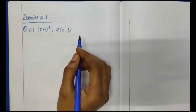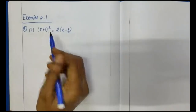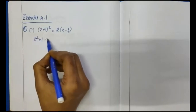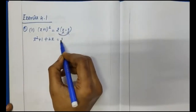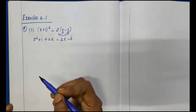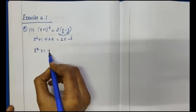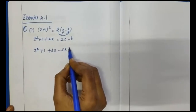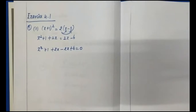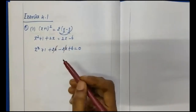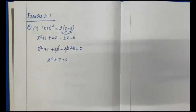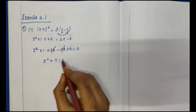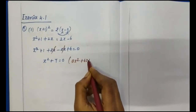So simplify: using the identity (a+b)² = a² + 2ab + b², expand the left side. Then multiply the right side inside the bracket to get 2x minus 6. So we have x squared plus 1 plus 2x minus 2x plus 6 equals 0. Here, plus 2x and minus 2x cancel. Remaining: x squared plus 7 equals 0.